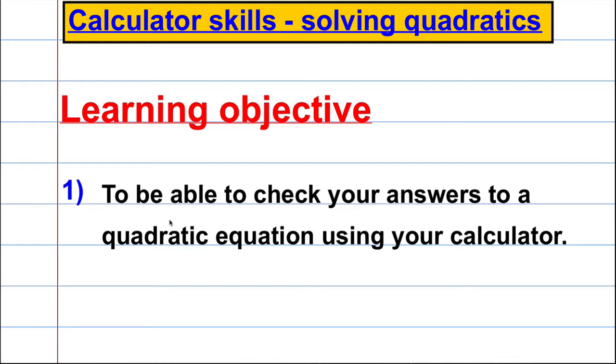So what we're going to be able to do, I want you to be able to check your answers to quadratic equations or to a quadratic equation using your calculator. In this series I'm always going to be dealing with the Casio calculator and it's FX991ES because I find it the most useful for a higher level GCSE or A-Level.